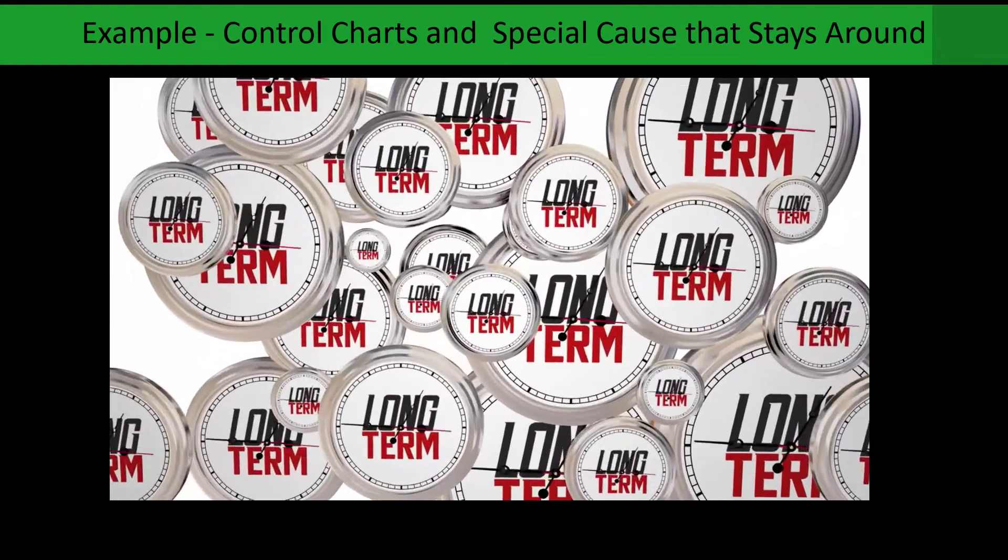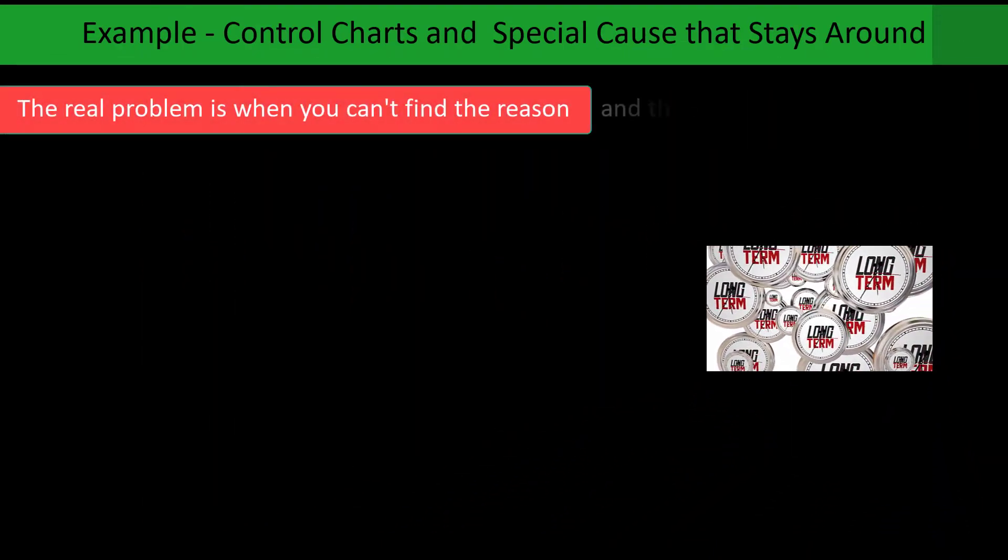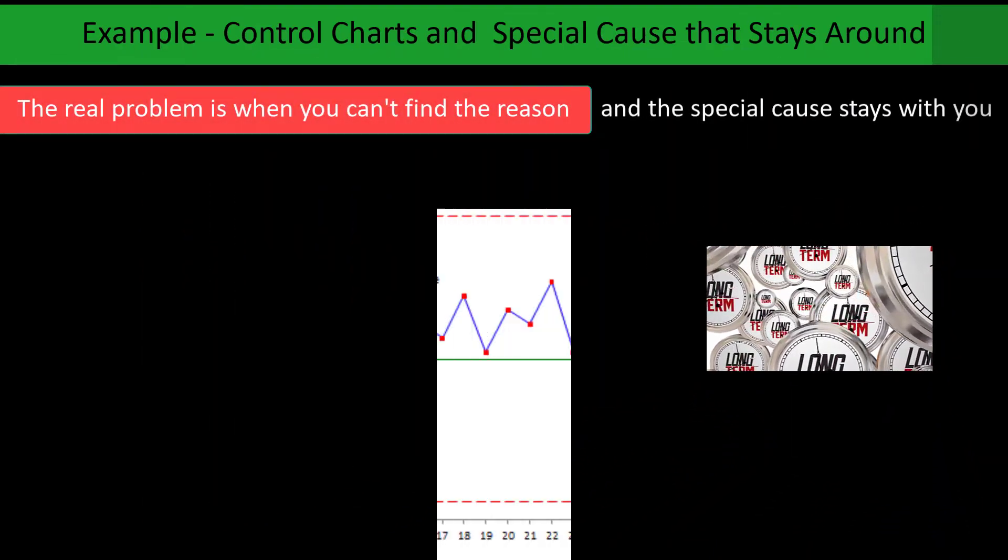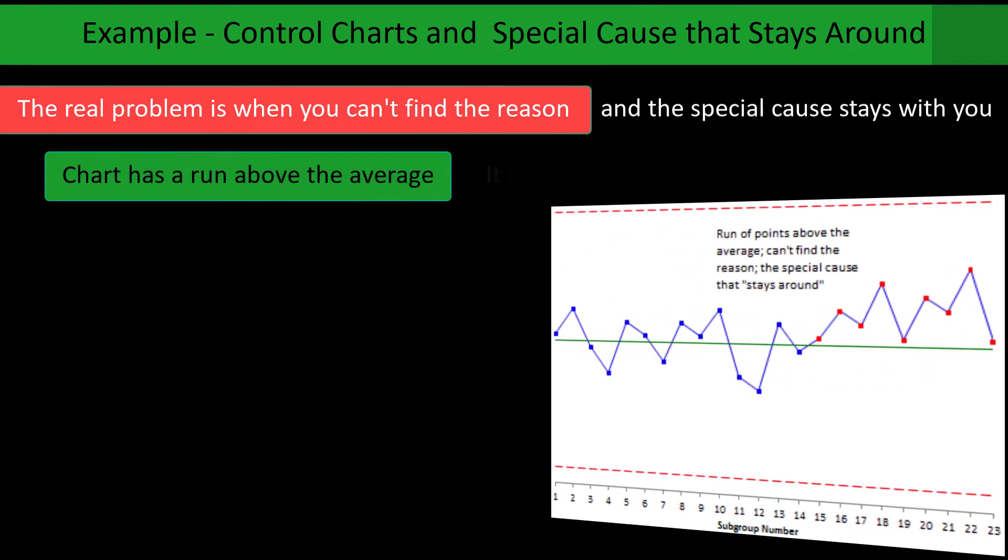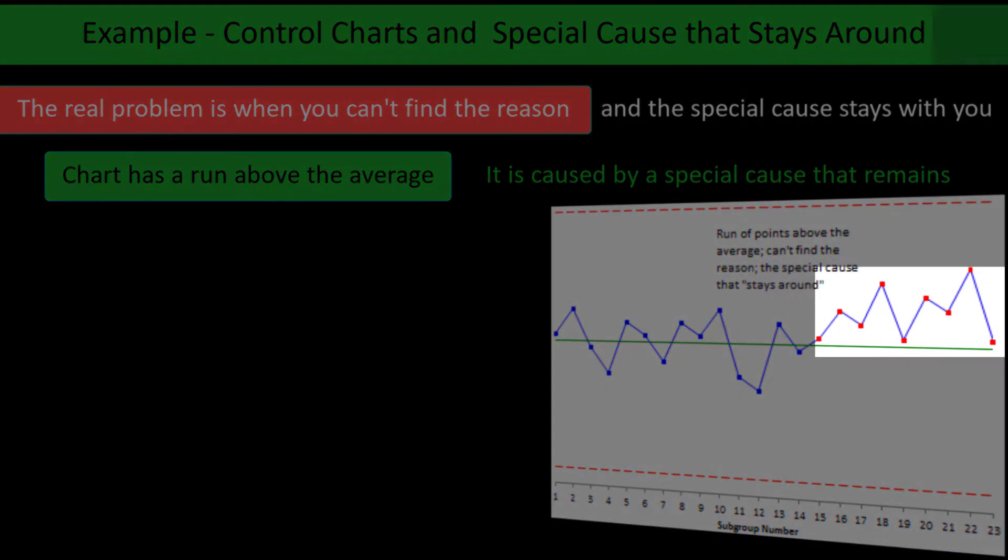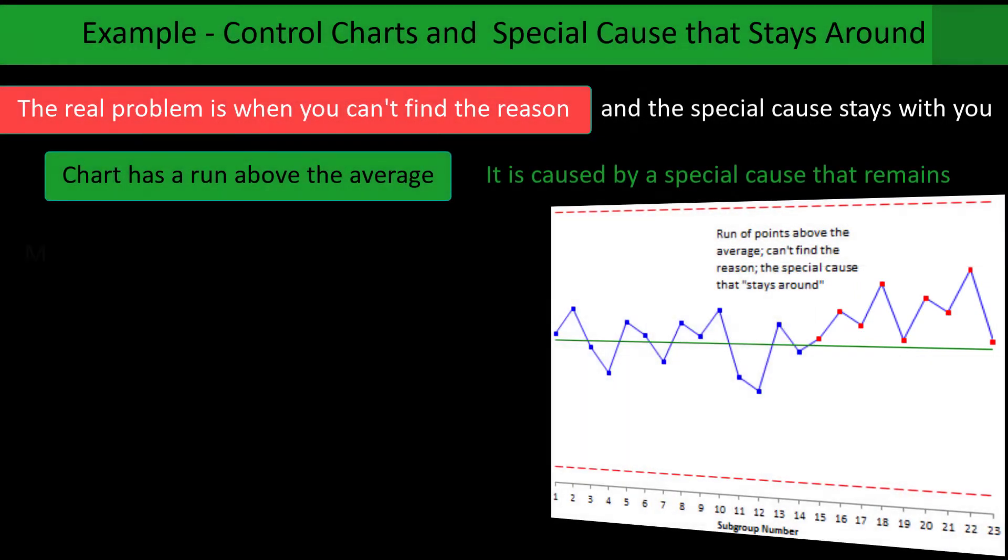But here's another example of a special cause that stays around on your control chart. Here the real problem is when you can't find the reason and the special cause stays with you. For example, a run of points above the average. You can't find the special cause. Perhaps you had a subtle change in raw material, something that moved the average up a bit, and you can't find it no matter how hard you look.